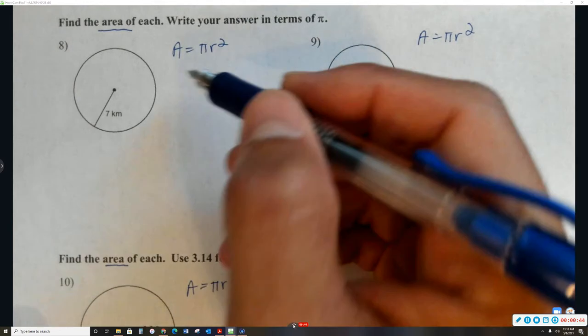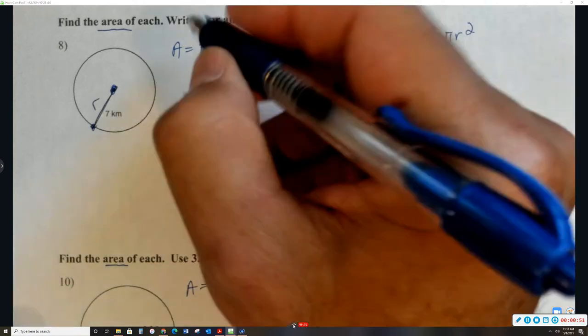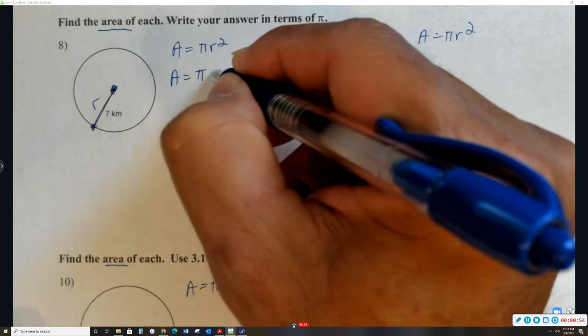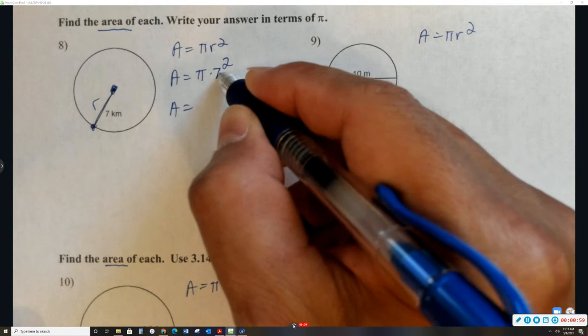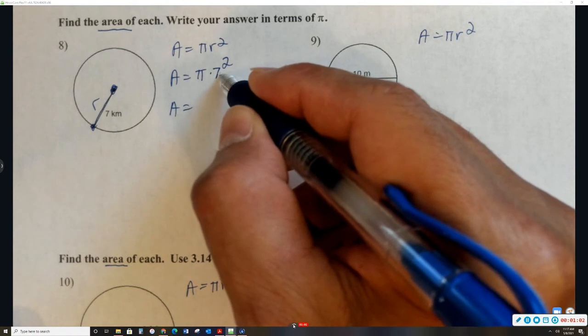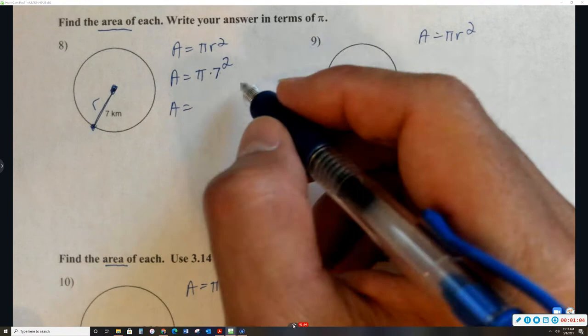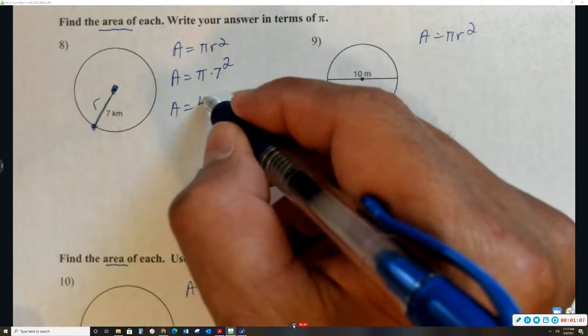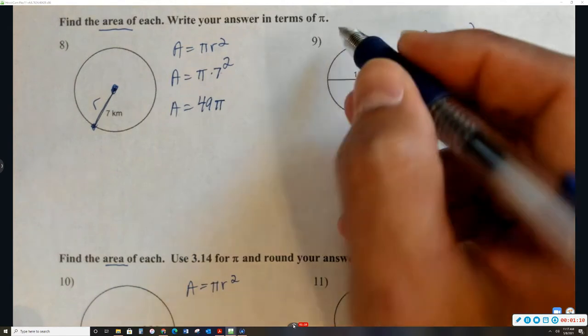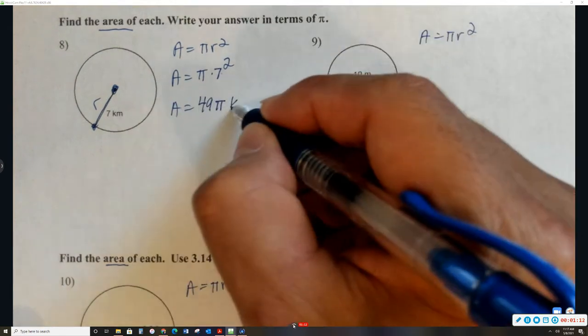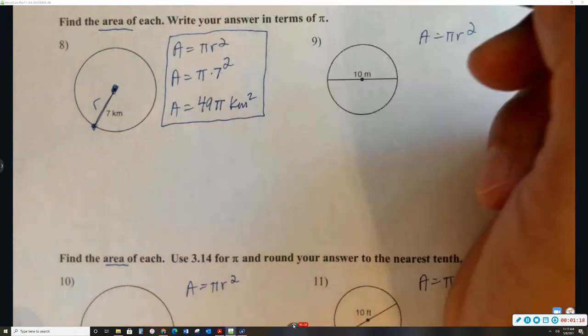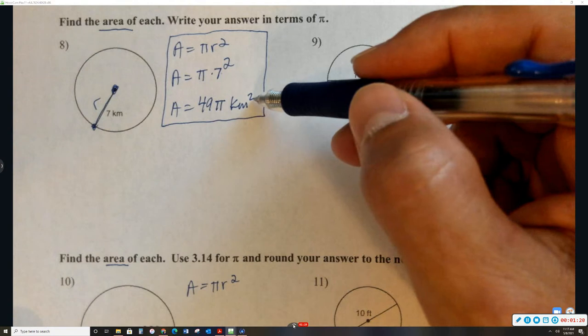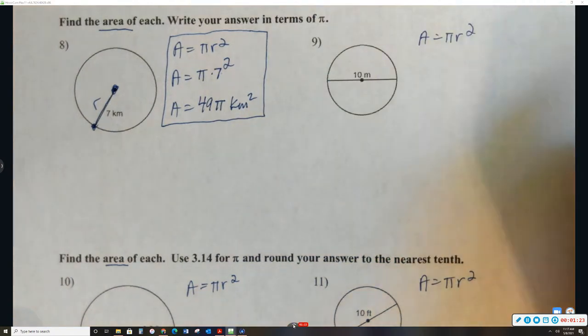So again, remember the radius. This is the radius. So the radius is 7 kilometers here. So all I need to do is replace the r with 7. And then this is 7 times 7, it's not 7 times 2. Some people forget that. So 7 squared is 49, and then there's my pi. And then the only other thing left is to put the units. And remember, area is always squared. Area is two-dimensional and that's why they have the square. That's number 8.